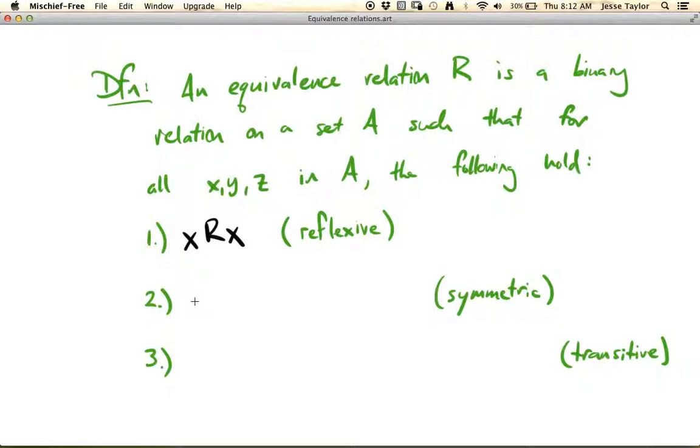The symmetric condition says that if X is related to Y, then Y must also be related to X. So essentially an equivalence relation has to go both ways. If one thing is related to something else, then the reverse has to be true as well.